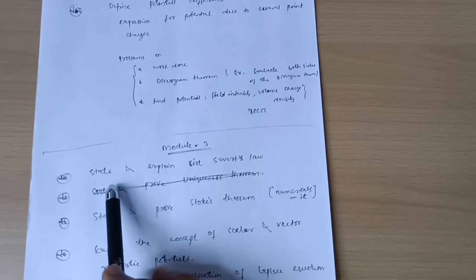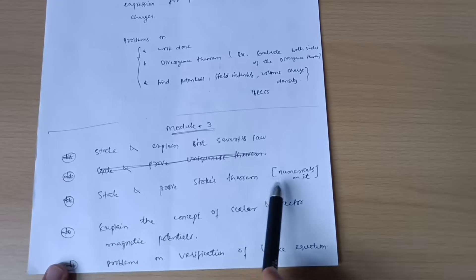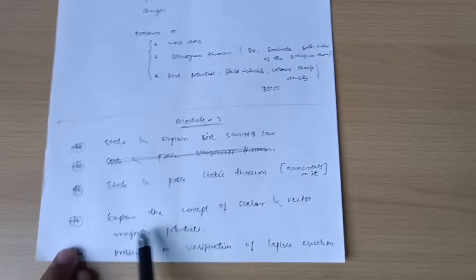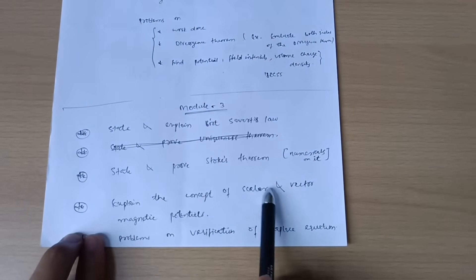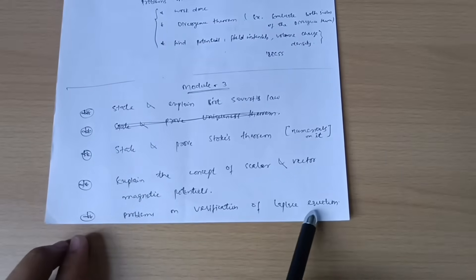Module third: State and explain Biot-Savart's law. State and prove Stokes theorem, and you should go through numericals related to Stokes theorem. Explain the concept of scalar and vector magnetic potentials. Problems on verification of Laplace equation.